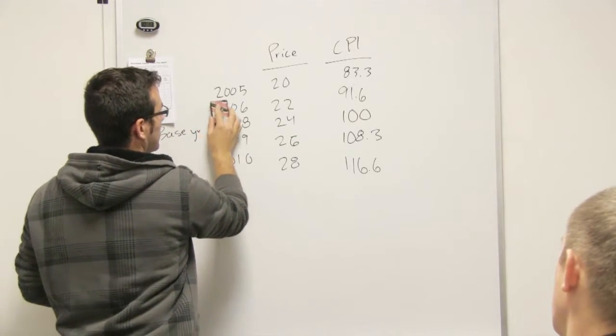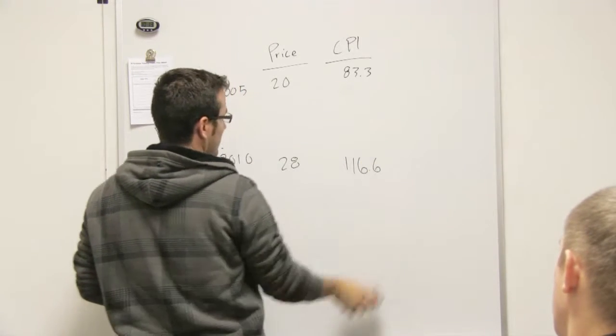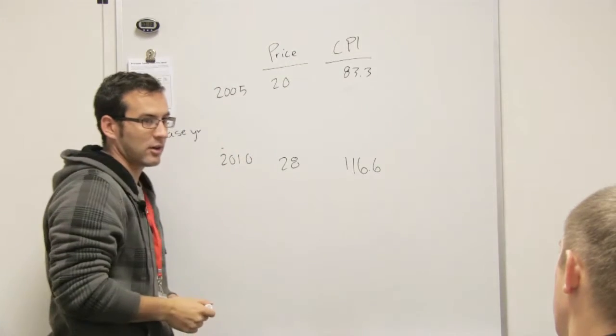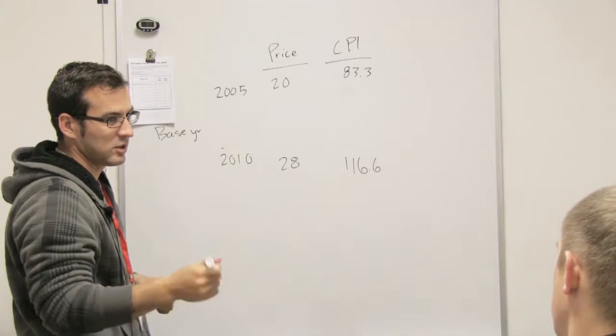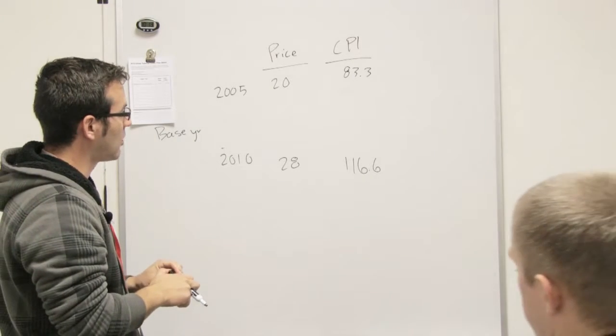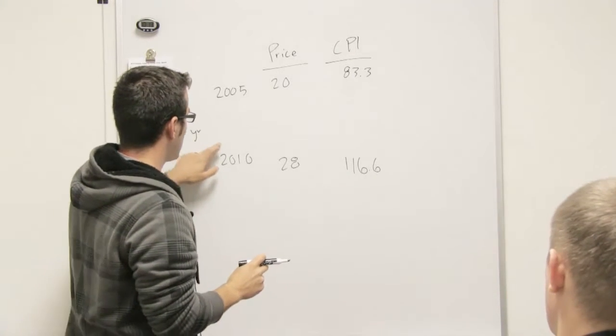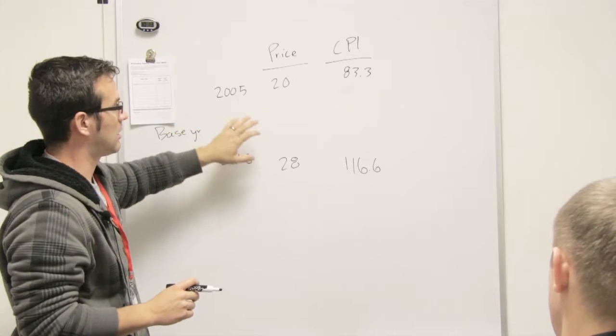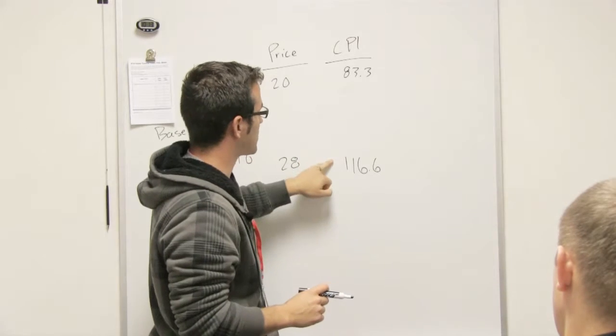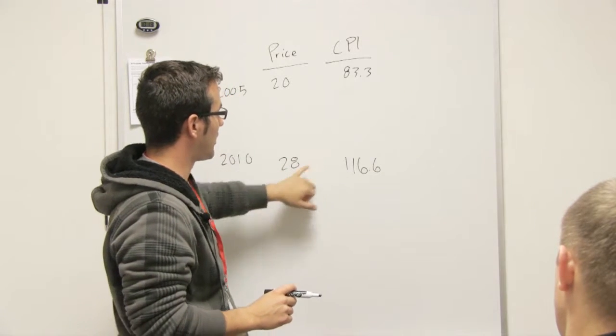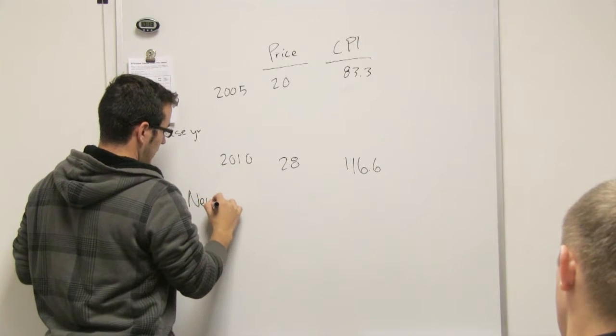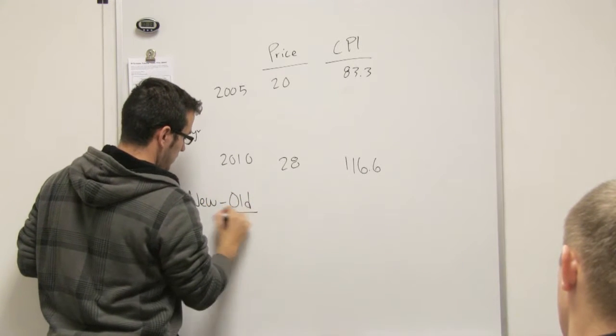For example, they might only give you maybe this information right here, and so they're going to say, oh, what is the inflation rate per year from here to here? Do you know how you would do that? Maybe that's a little trickier. So here you want to first find your percentage change - you know it's over five years, but first you just want to find how much percentage it's changed from here to here, right? So you could do your... this is where you would use new minus old divided by old. Have you seen that equation yet?